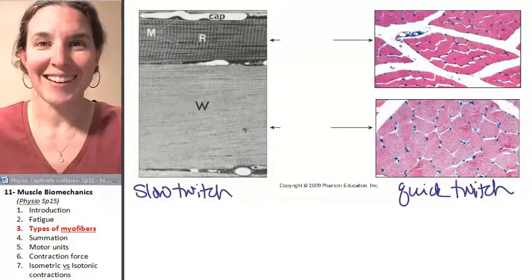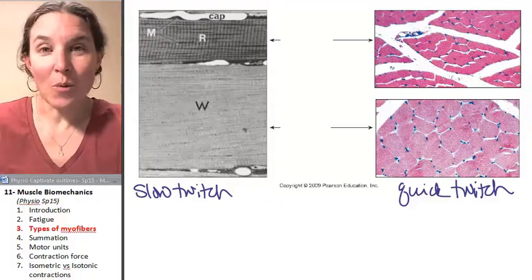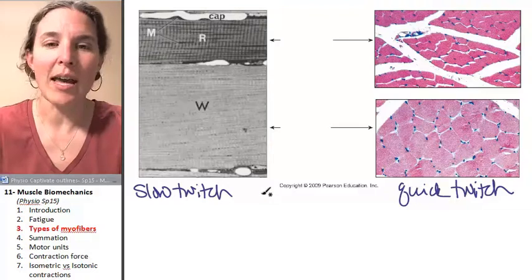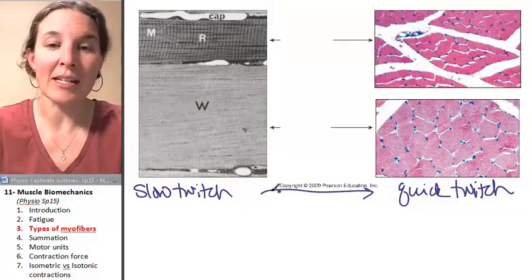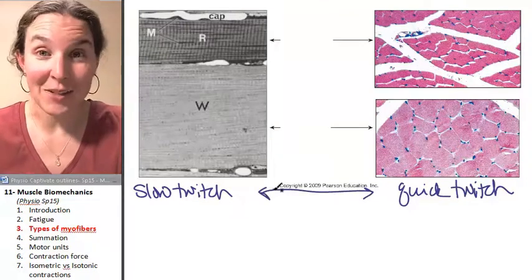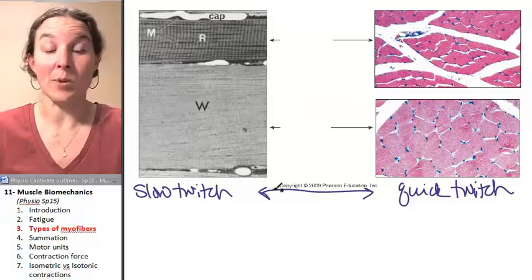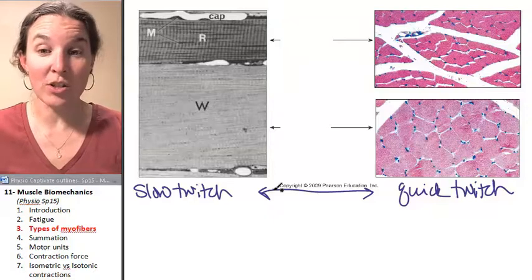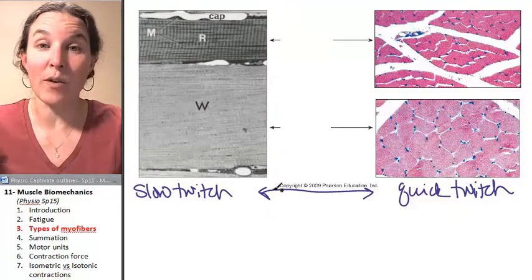Now, two categories. Awesome. Black or white, right? No, of course not. In physio, what we often find is that nothing is ever black and white, and there's always exceptions, and the fact is that there aren't just two kinds of myofibers. There's a range of myofibers.